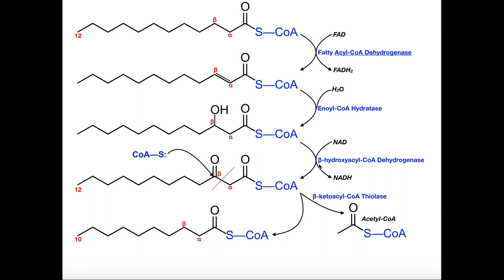The third reaction is catalyzed by beta-hydroxyacyl-CoA dehydrogenase. This oxidizes the OH group into a carbonyl — specifically a ketone. The electrons from the hydroxyl group go to NAD, so NAD gets converted to NADH. This NADH will go into the electron transport chain and fuel complex one, which is a different protein than the FADH2 from the first step. In any case, this provides electrons for the electron transport chain and is a reduced coenzyme.